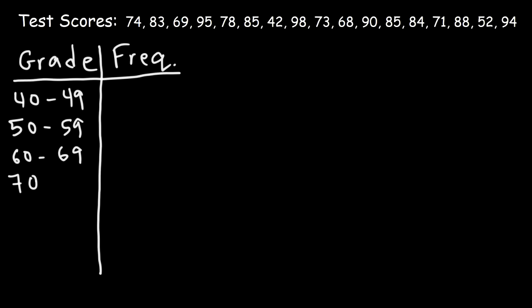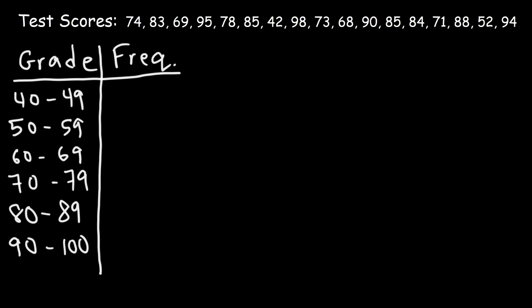In the US, a score of 60 to 69 usually represents a D, 70 to 79 represents a C, 80 to 89 represents a B, and 90 or above represents an A. Below 60 is an F.